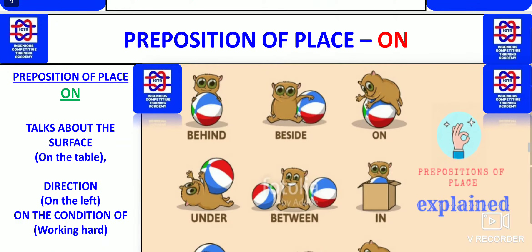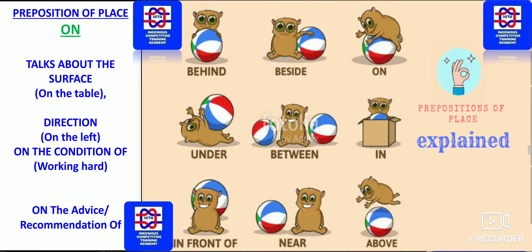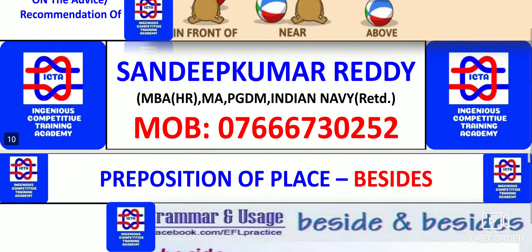Next we have preposition of place with 'on.' It talks about surface: the book is on the table. Direction: it is on the left. Condition of: by working hard you can succeed — on the condition of. On the advice or recommendation of — that is the way how you use it. Please have a look at whatever pictures have been given in every slide — that is for your remembrance and revision.